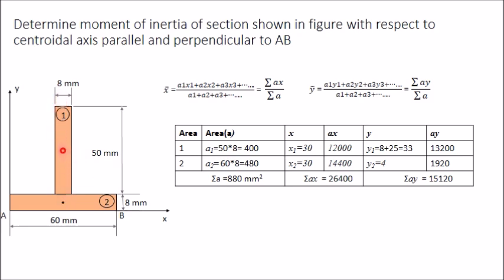So y₁ = 33 mm. For area two, the total height is 8, so the centroid is at y₂ = 4 mm from the x-axis. Multiply: 400 × 33 for area one's Ay, and 480 × 4 for area two's Ay.